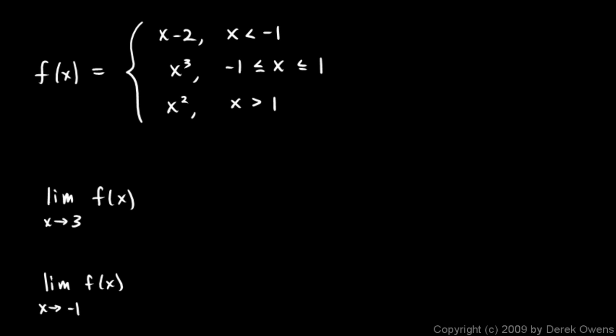And we see that in the first problem here. The limit as x approaches 3 of f of x. Well, this is f of x here. And it's defined as x minus 2 for values less than negative 1, and x cubed for values between negative 1 and 1, and x squared for values greater than 1. So as x approaches 3, we're here in this set of x values, where x is greater than 1. So this is just the limit as x approaches 3 of x squared. Okay, and that's easy. That's just 3 squared, or 9.